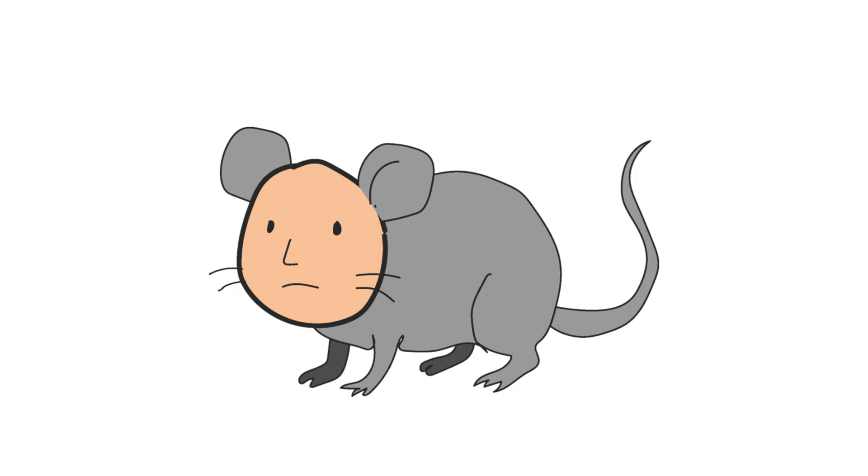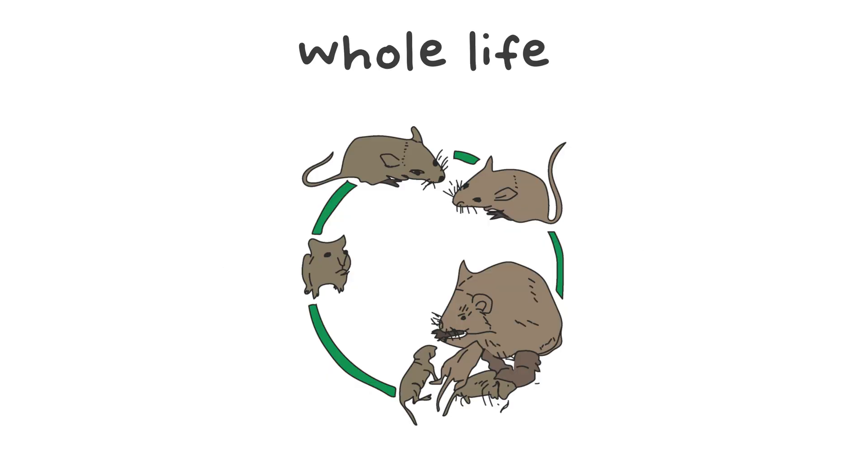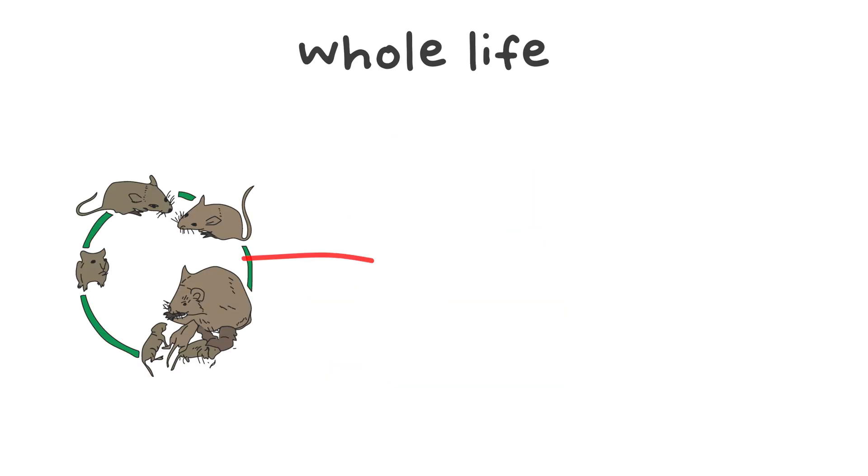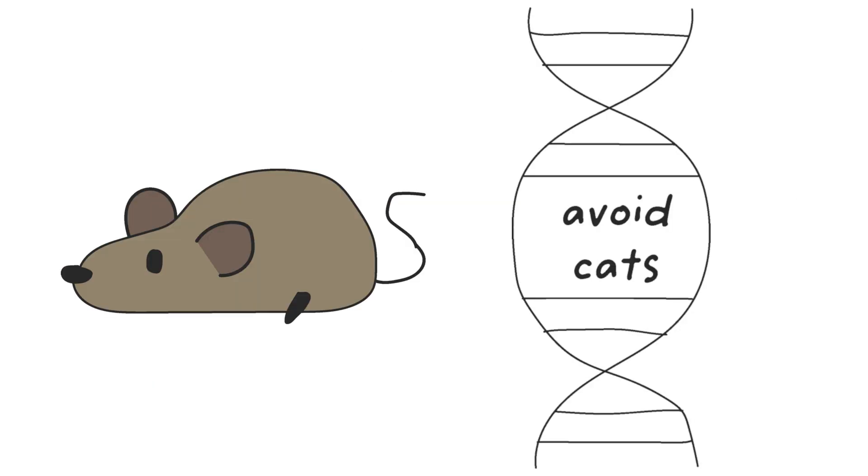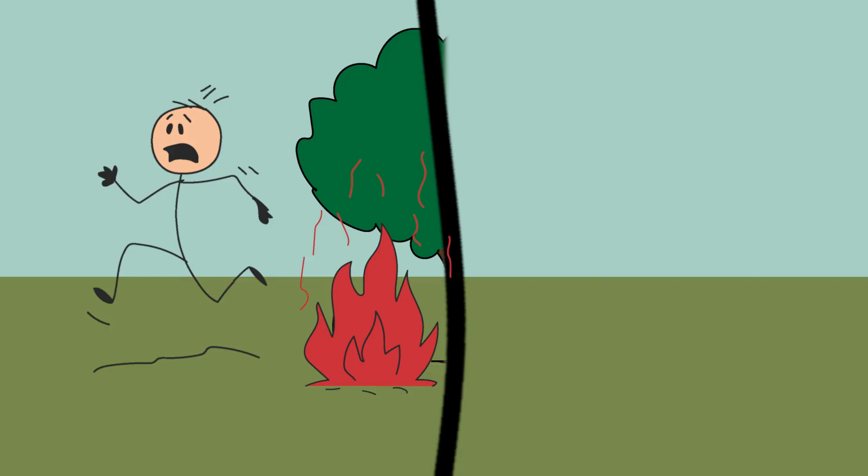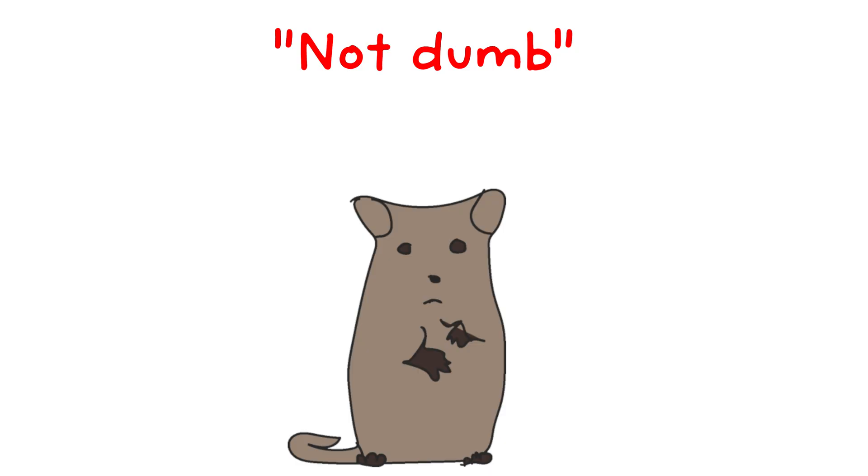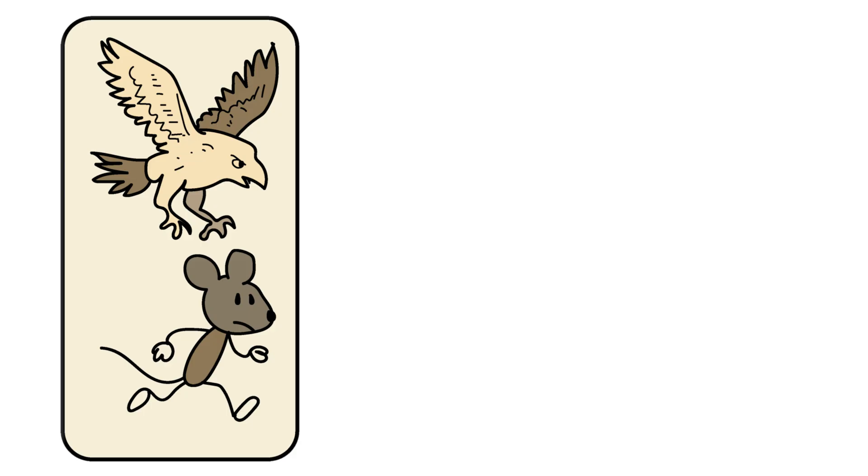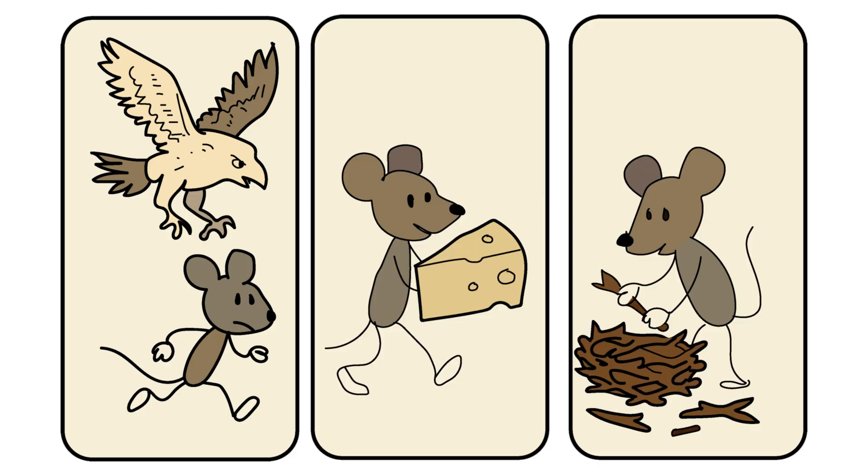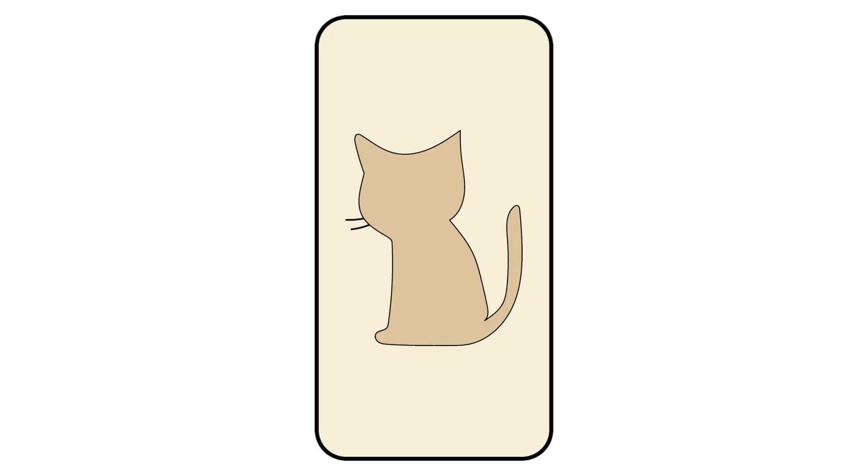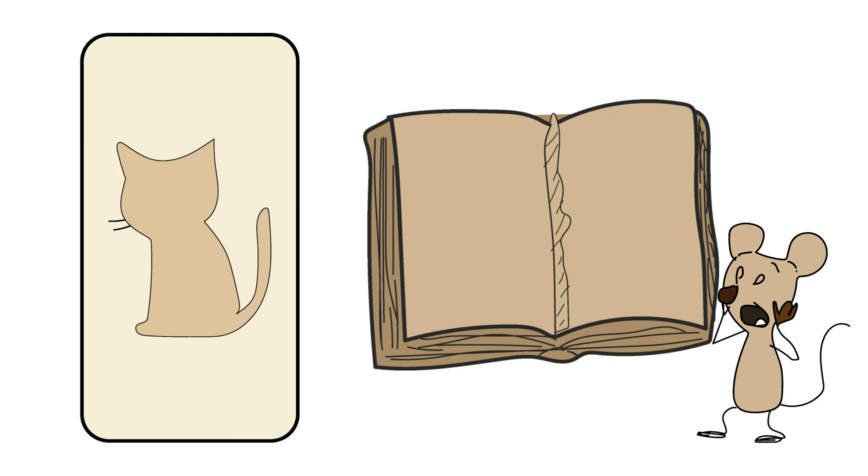Now, imagine being that mouse for a second. Your whole life, you've known one fundamental truth: cat equals death. It's in your DNA, in your deepest instincts. It's like if a human suddenly lost their fear of fire and started finding flames comforting. It's not that the mouse becomes stupid. It can still avoid other predators, find food, build nests. But when it comes to cats, it's as if someone completely deleted that page from its survival manual.